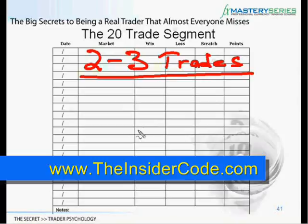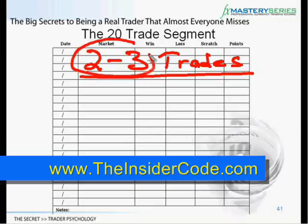Now in baseball and basketball, of course, they have multiple games in their world titles. The World Series is a series of games. In basketball, the championship is a series of games. And it's because if you only have one game, the better team could be having a bad night.